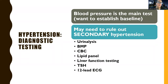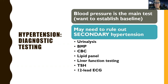For diagnostic testing, the main thing we do is check blood pressure and see what their baseline is, comparing it to previous readings to track progression. We may also rule out secondary causes of hypertension — looking for tumors, kidney issues, liver issues, thyroid issues, and endocrine disorders. These additional tests help if we suspect a secondary cause.